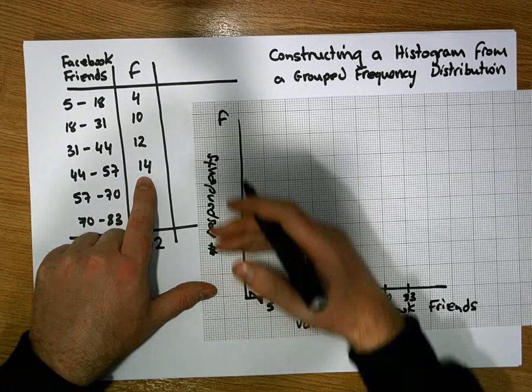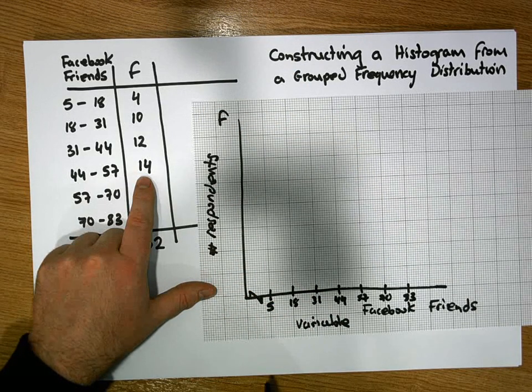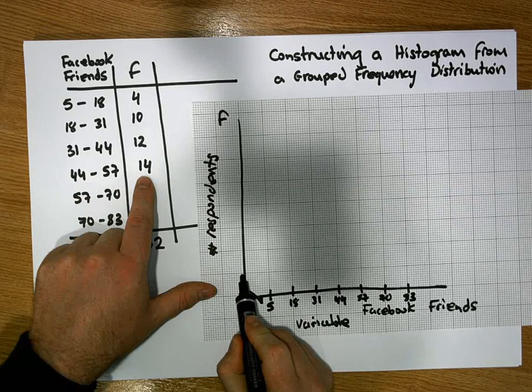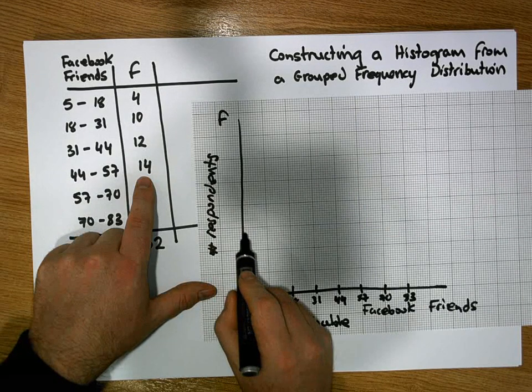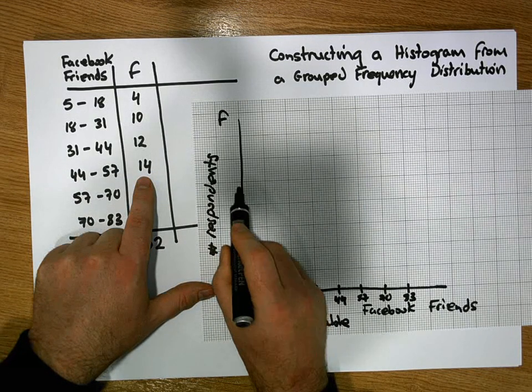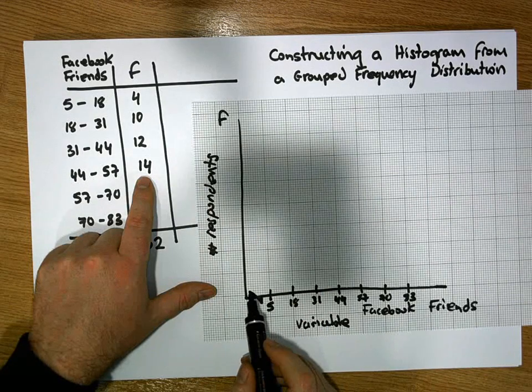So what we could do is we could go up in intervals to get to 14. If we said that this was let's say 3, 6, 9, 12, 15, that would do. Let's see if we can do any better. Try to use as much of the space as possible.